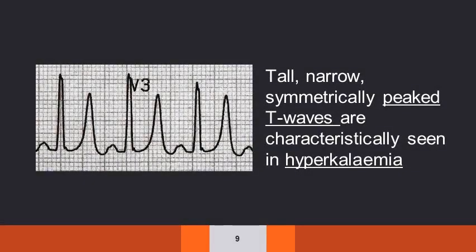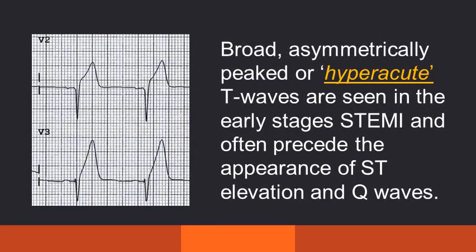Tall, narrow, symmetrically peaked T waves are characteristically seen in hyperkalemia. Broad, asymmetrically peaked or hyperacute T waves are seen in the early stages of ST elevation myocardial infarction, and it often precedes the appearance of ST elevation and Q waves.